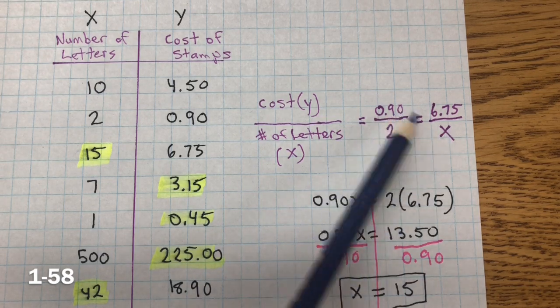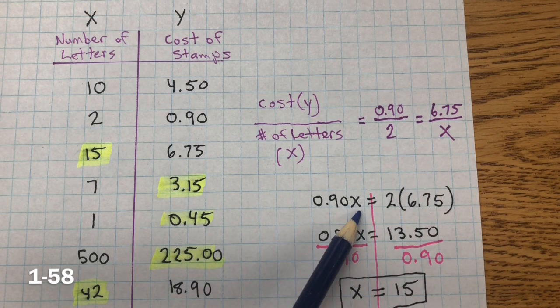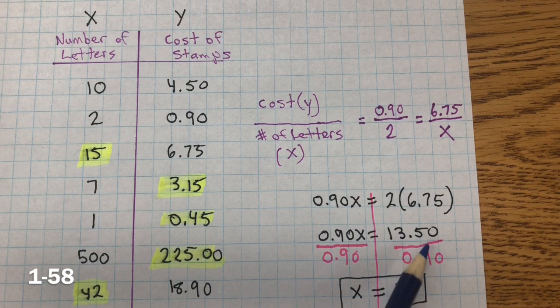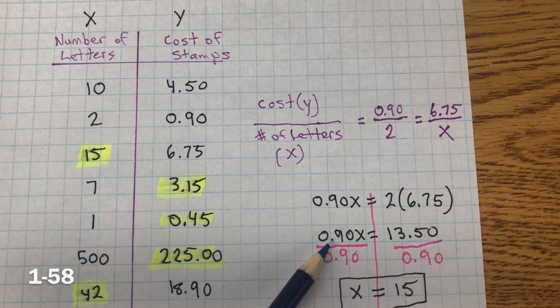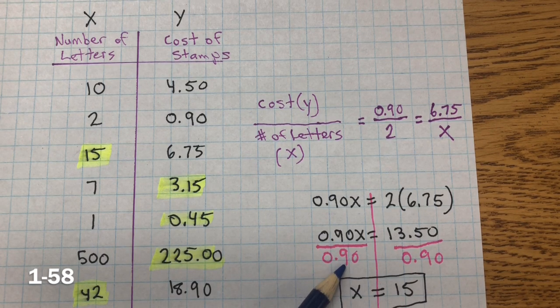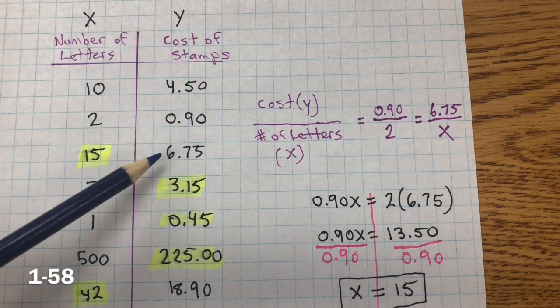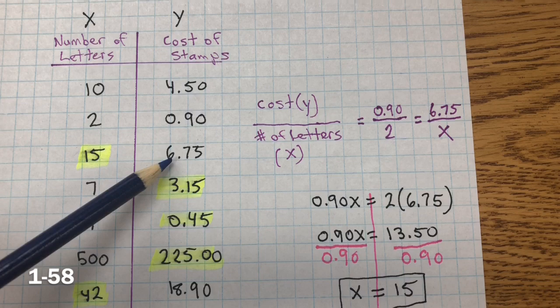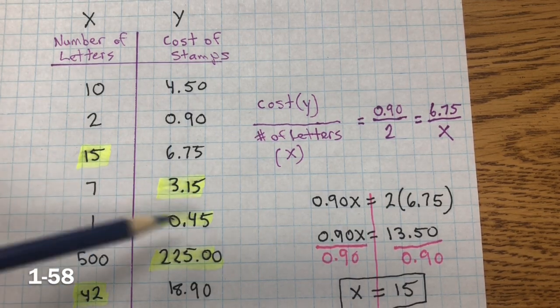So, now, I cross multiply. 90 hundredths multiplied by x is 90 hundredths x. And 2 multiplied by $6.75, which equals $13.50. Inverse property and multiplication is division. So, we divide both sides by 90 cents. And we get x equals 15. So, for 15 letters, it's going to cost $6.75. And I can do that for any of the other missing values.